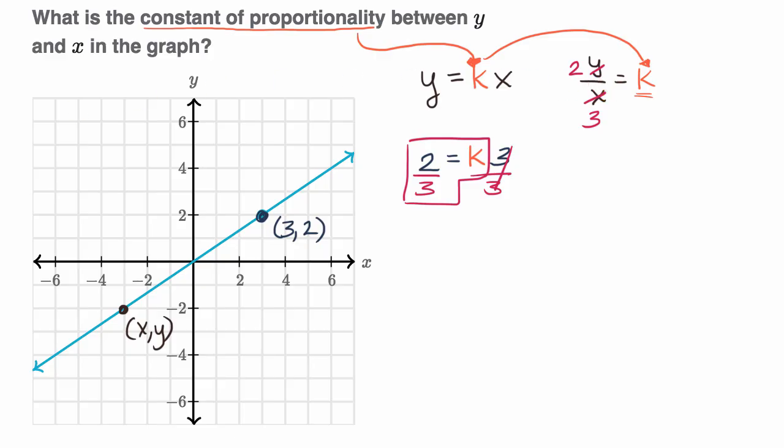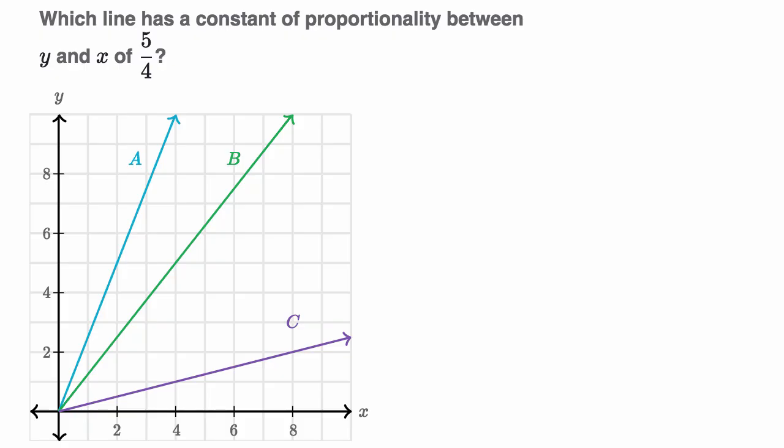Let's do another example. So here we have which line has a constant of proportionality between y and x of five over four. So pause the video and see if you can figure that out.